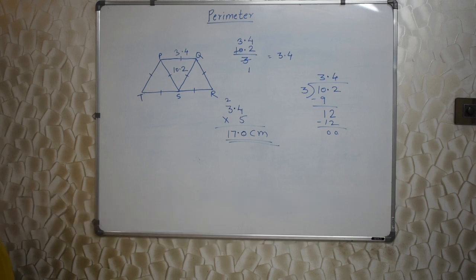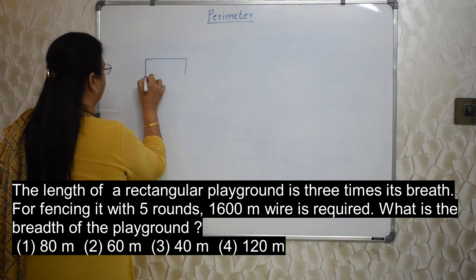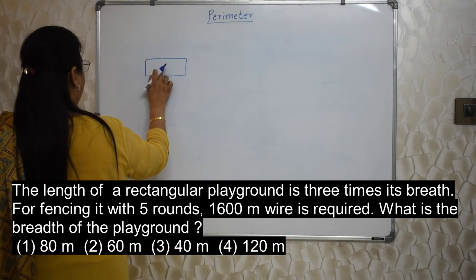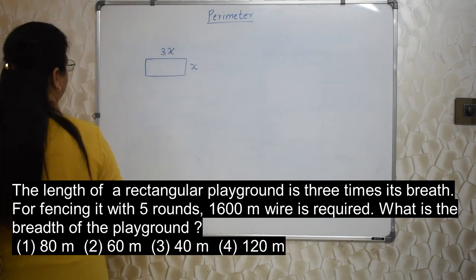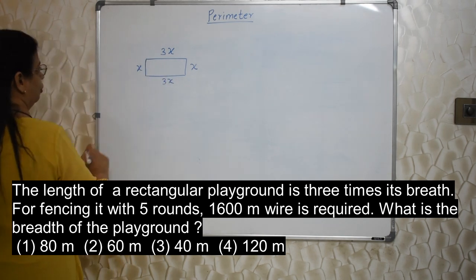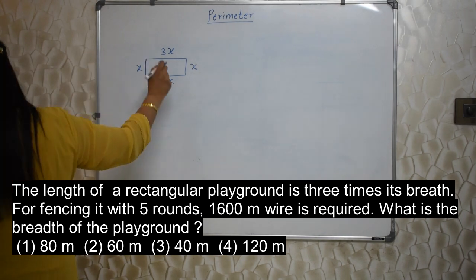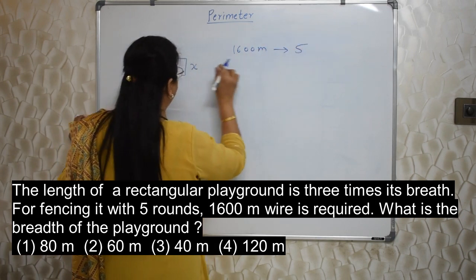Next sum will appear on your screen. The length of a rectangular playground is 3 times its breadth. For fencing it with 5 rounds, 1600 metre wire is required. What is the breadth of the playground? Very easy. This is a rectangle. The length of this rectangular playground is 3 times its breadth. So if the breadth is x, length is 3x, 3 times. So this also will be 3x. This also will be x because this is breadth, these are lengths.